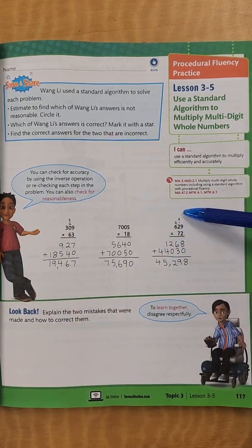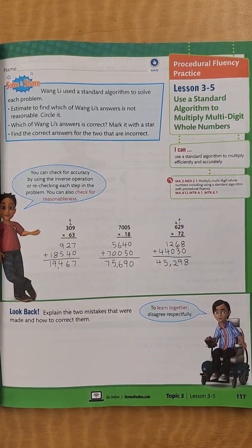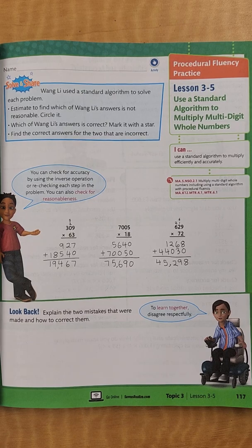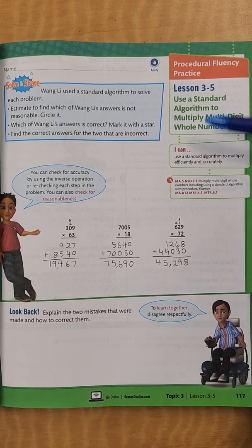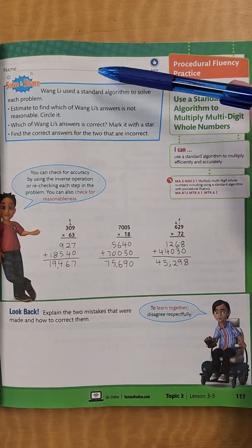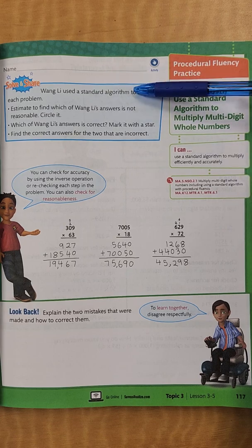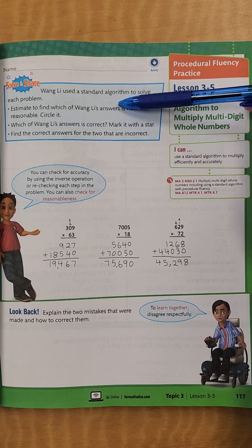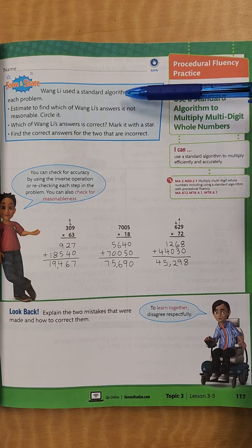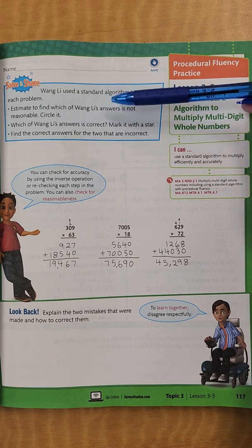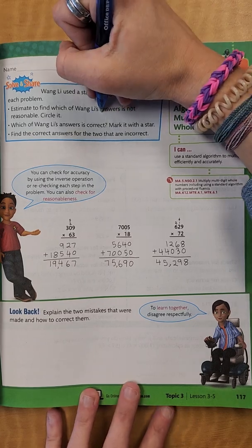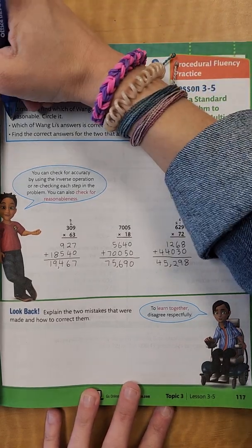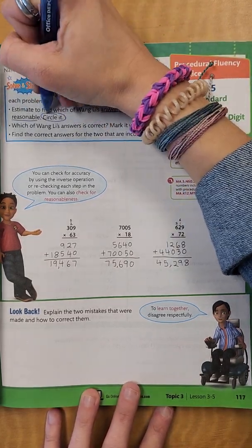This first problem that we're going to look at today, let's just read it real quick. So it says, Wang Li used a standard algorithm to solve each problem. Estimate to find which of Wang Li's answers is not reasonable and circle it.